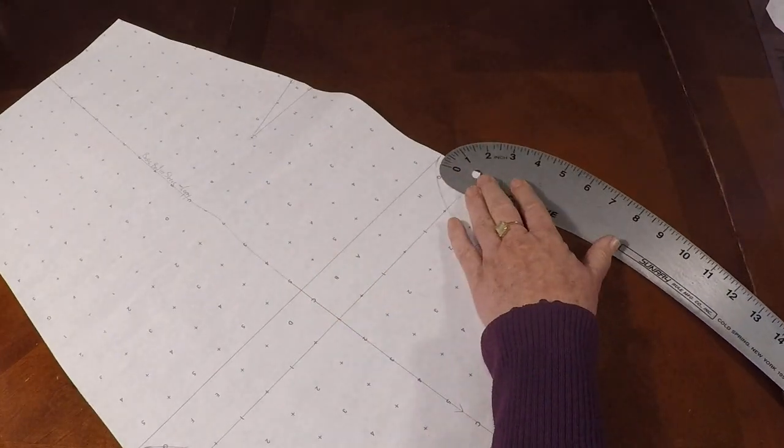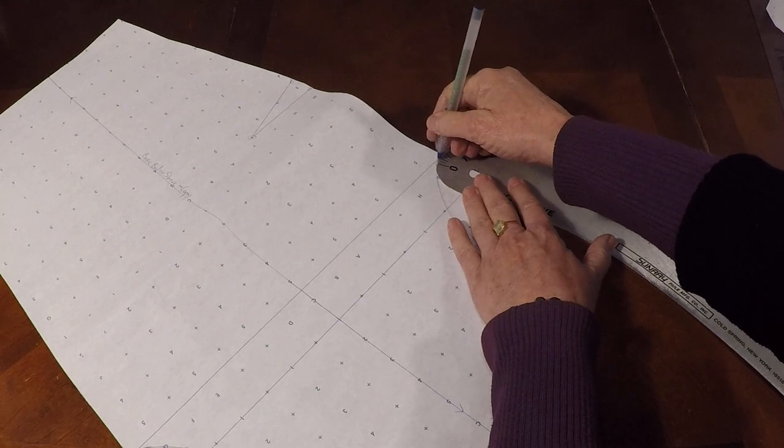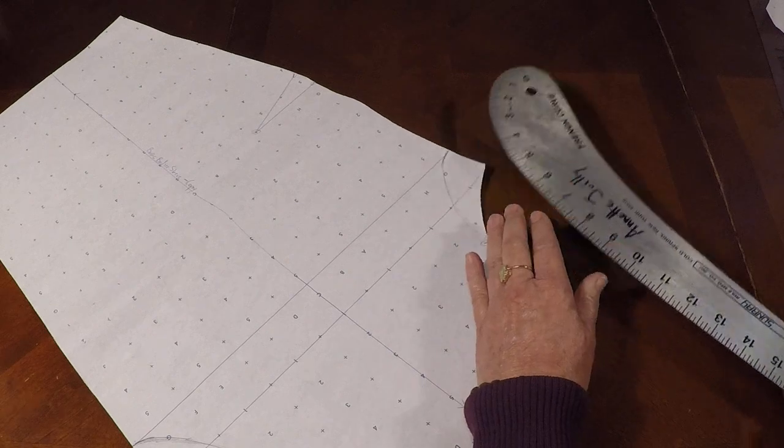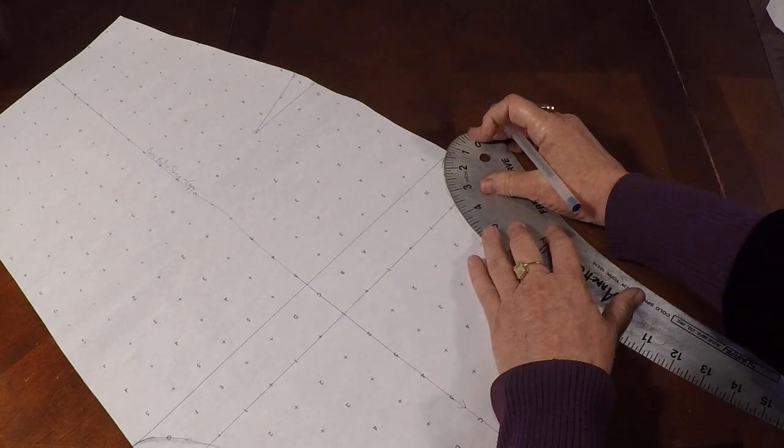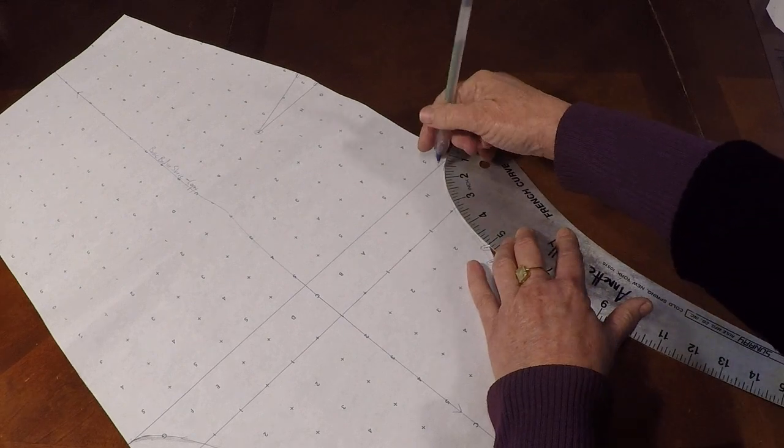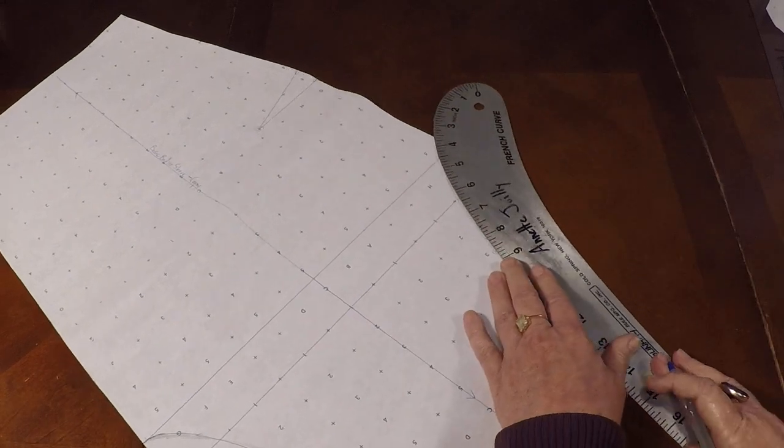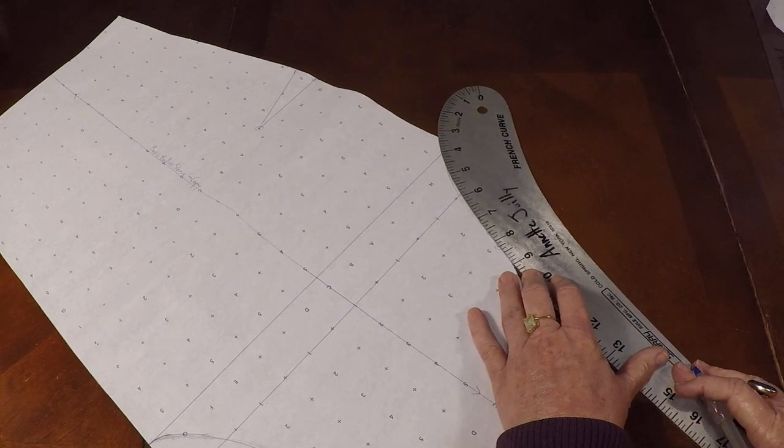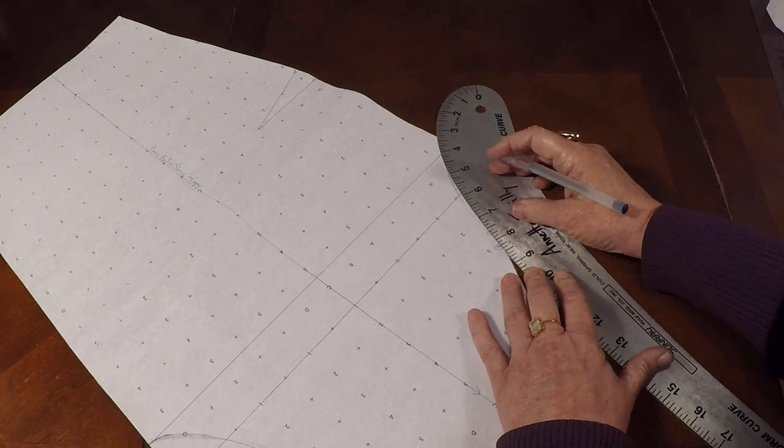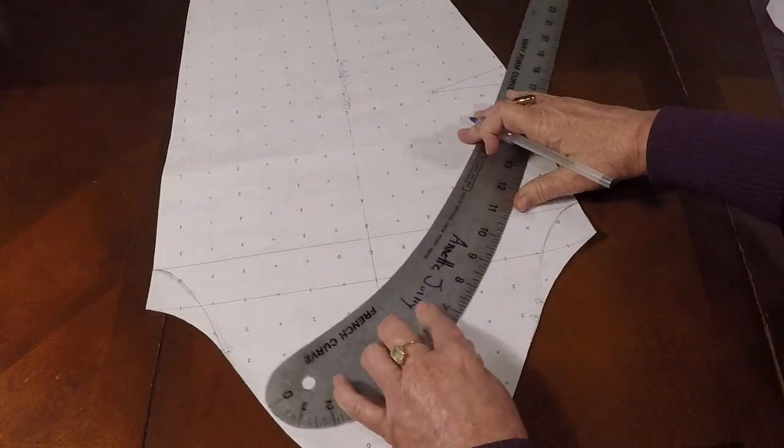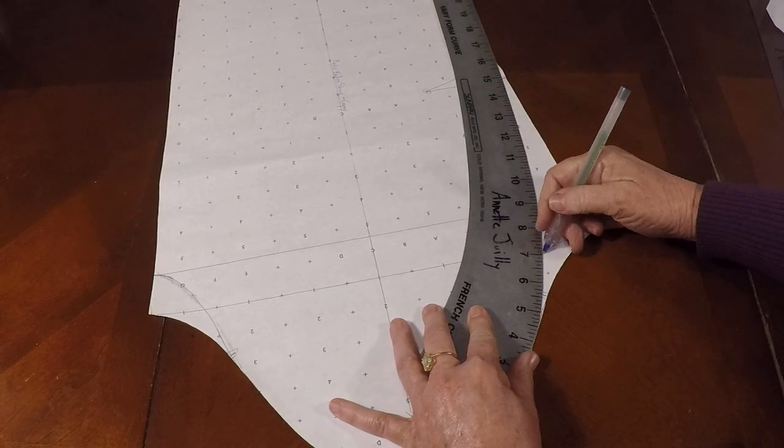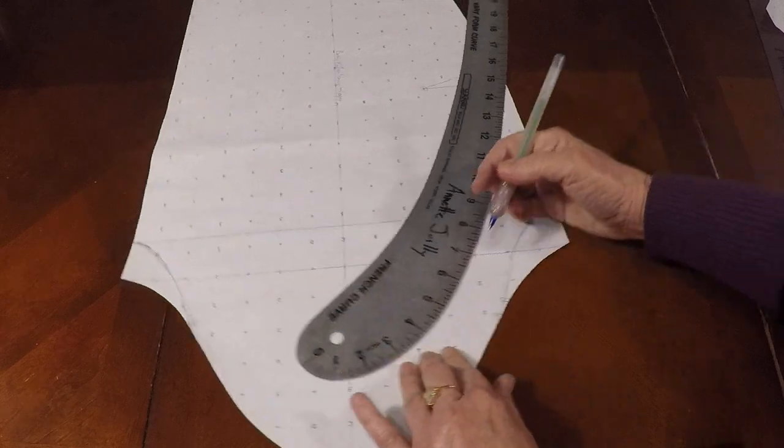Now, let's deal with the other side. A little bit straight-ish, not too curvy there. Now, I can flip into that curve. Try to straighten my curve out a little bit. And I'm going to flip it and blend.